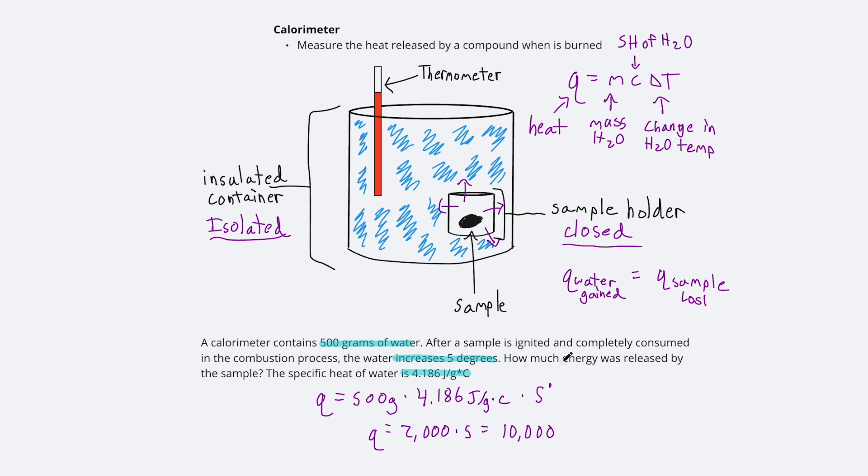Double check all of your units and it looks like we did use all the correct units and that should give us joules. So that is 10,000 joules that it took to heat up 500 grams of water by 5 degrees.